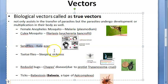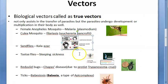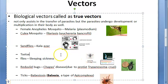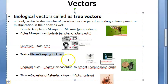Sandflies transmit kala-azar, caused by Leishmania donovani. The tsetse fly transmits African sleeping sickness, which is caused by Trypanosoma.